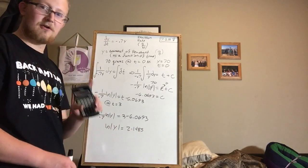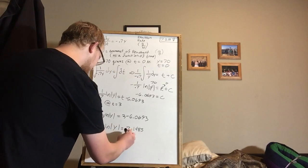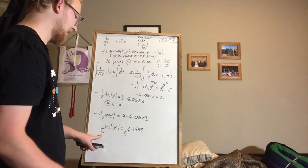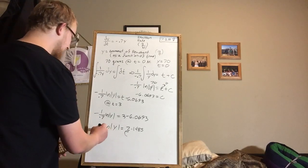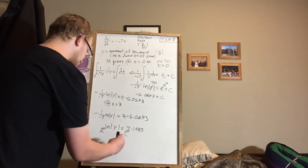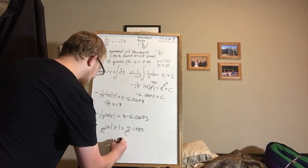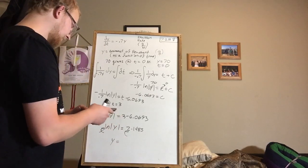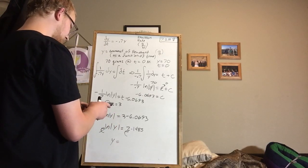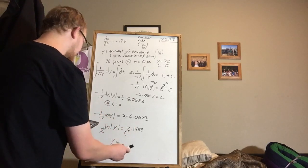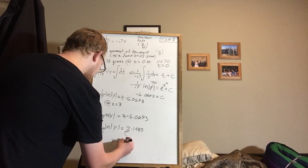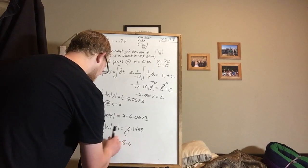And then to solve for y finally, I'm going to raise e to the power of both sides. And of course, e and Ln are inverse functions, so they cancel. And what we're left with is y is equal to e raised to the power of 2.1485, which is roughly 8.6.